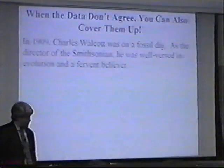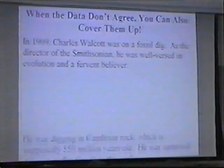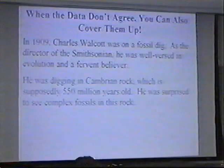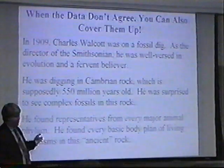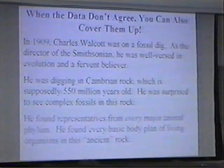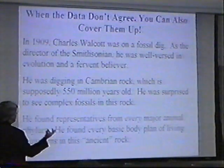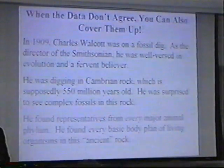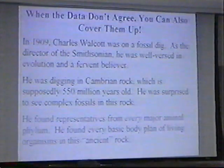The person best known for that is a fellow by the name of Charles Walcott. In 1909, he was the director of the Smithsonian and an evolutionist on a fossil dig. He was digging in a series of rock called Cambrian Rock, supposedly 550 million years old or so. He was surprised to find complex fossils in this rock — basically, representatives from every major animal phylum in this ancient rock.